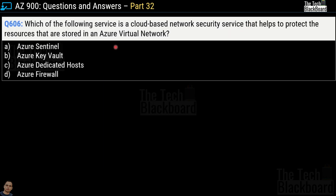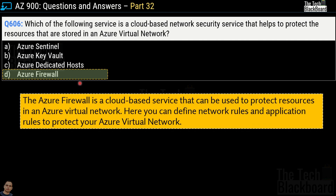Question 606 asks which service is a cloud-based network security service that helps protect resources stored in an Azure Virtual Network. The options are Azure Sentinel, Azure Key Vault, Azure Dedicated Host, and Azure Firewall. The correct answer is option D, Azure Firewall. You can also define network rules and application rules within Azure Firewall to protect your virtual network.